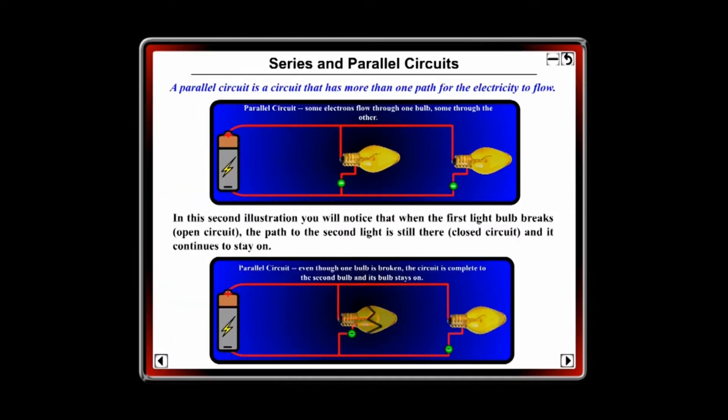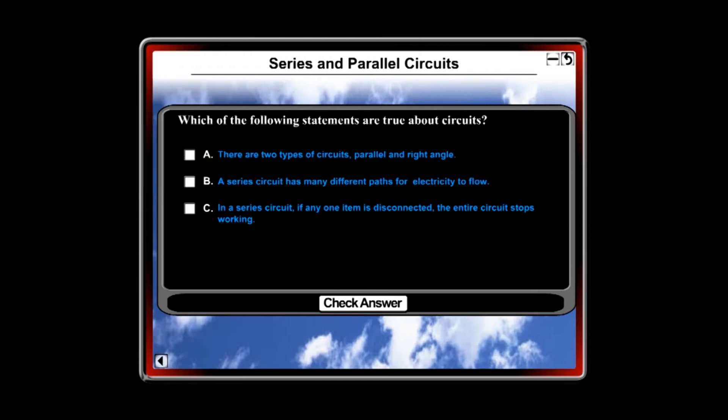Next, the student learns about parallel circuits and how even if one bulb goes out, the other can stay on because there is a second path for the electricity. Again, they would answer a question.